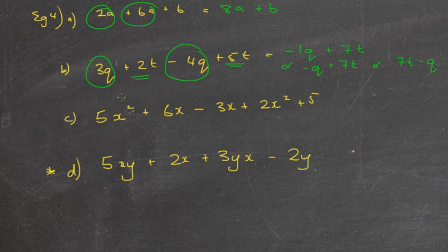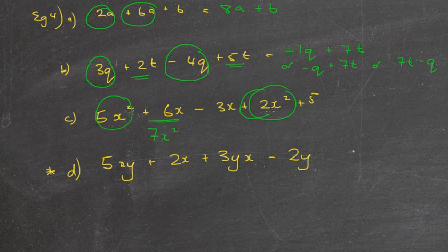Next one, we've got 5X squared plus 2X squared which is 7X squareds. I've got 6X minus 3X which is, well 6 take away 3 is positive 3. So, positive 3X and I've got this plus 5 on the end, so I'll put plus 5 on the end there.